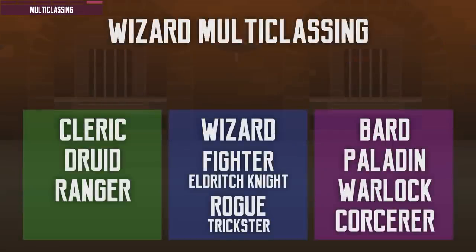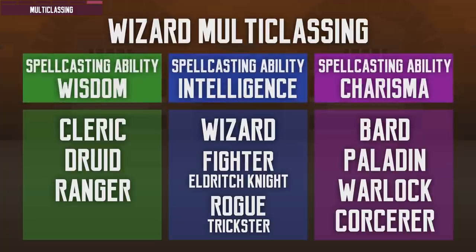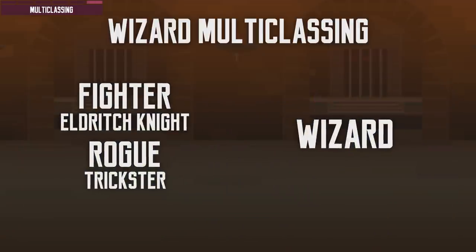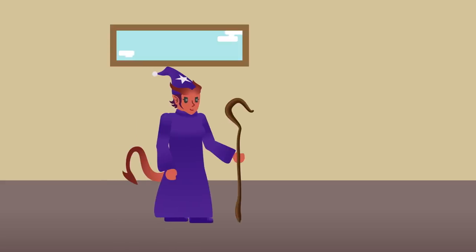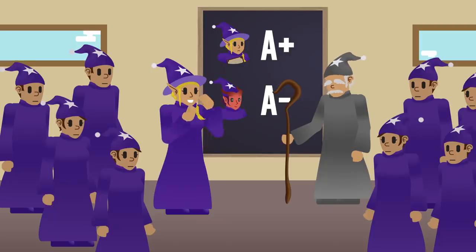Regarding multiclassing: wizards don't mix well with other spellcasting classes because wizard spellcasting relies on Intelligence while other casters use Wisdom or Charisma — requiring different abilities to cast spells from different classes, which is usually not optimal. On the other hand, they multiclass well with fighters and rogues, since Eldritch Knight fighters and Arcane Trickster rogues use Intelligence as their spellcasting ability and draw from the wizard spell list too. It usually happens the other way around, with those classes dipping a few levels into wizard for more spell slots and spell variety.